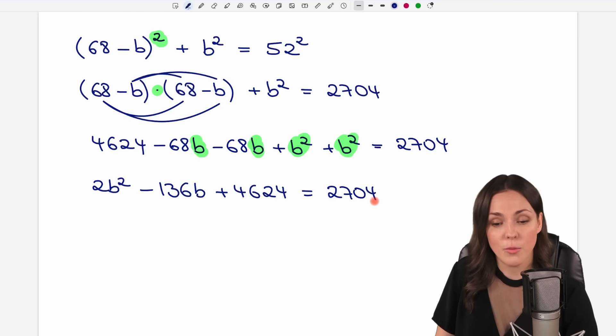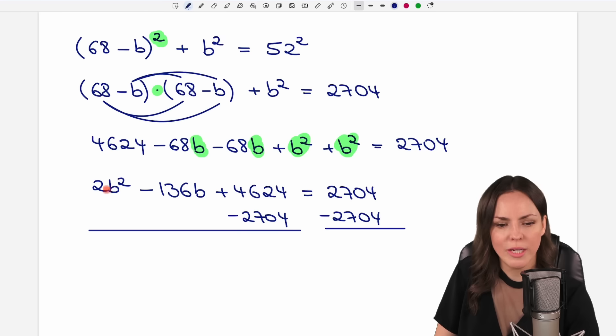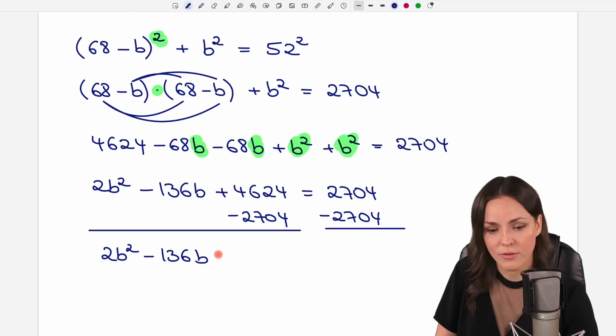This is a quadratic equation. And we can solve it by bringing everything to one side of the equation. So we want to subtract this number here on both sides of the equation so that we have everything on one side so that we get, we have our 2B squared here, the negative 136B. If we calculate this, we get a result of 1920. And on the other side, this cancels out and we have our 0.